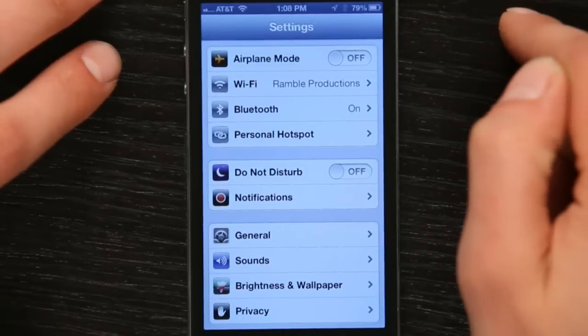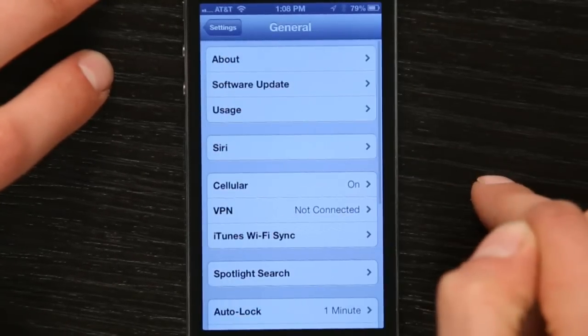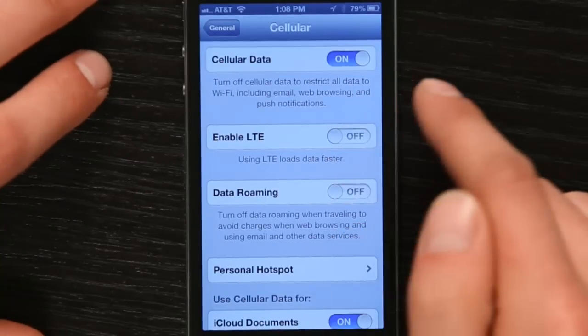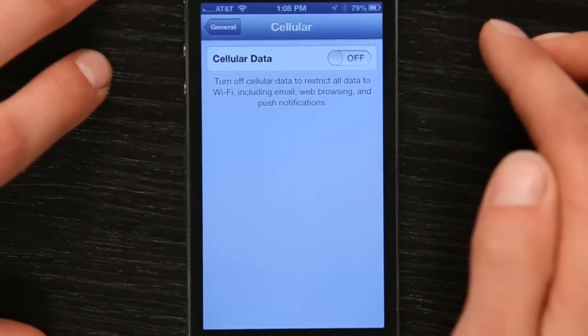So if your iPhone is getting hot, one thing you can do is go to settings, and general, and go to cellular, and turn off LTE and cellular data. That'll help. You'll still receive text messages and phone calls, but you won't be expending quite so much energy on trying to connect to cell phone towers.